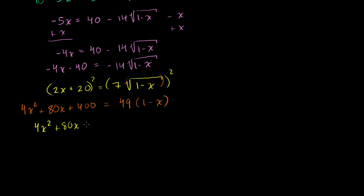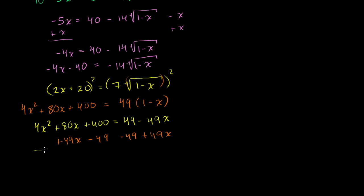So: 4x² plus 80x plus 400 equals 49 minus 49x. We add 49x to both sides and subtract 49 from both sides, which gives us: 4x² plus 129x plus 351 equals 0. Let me verify: 80 plus 49 is 129, and 400 minus 49 is 351. Now we have a straightforward quadratic equation, so let's use the quadratic formula.